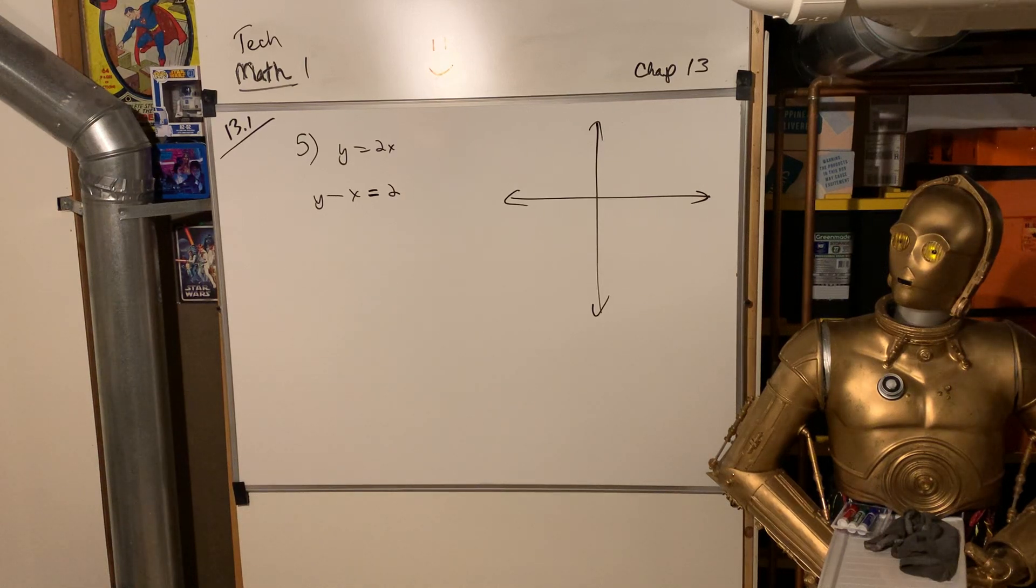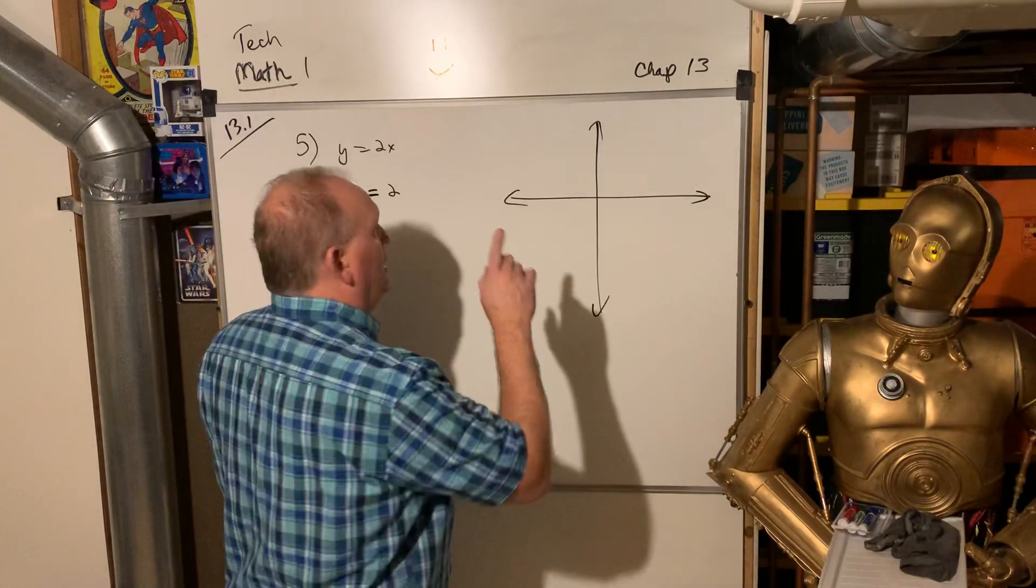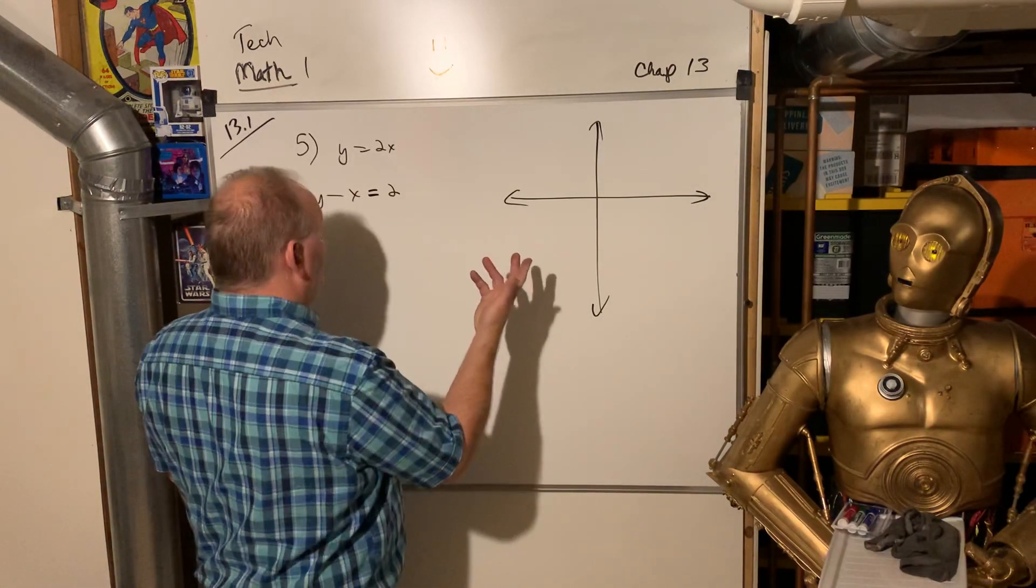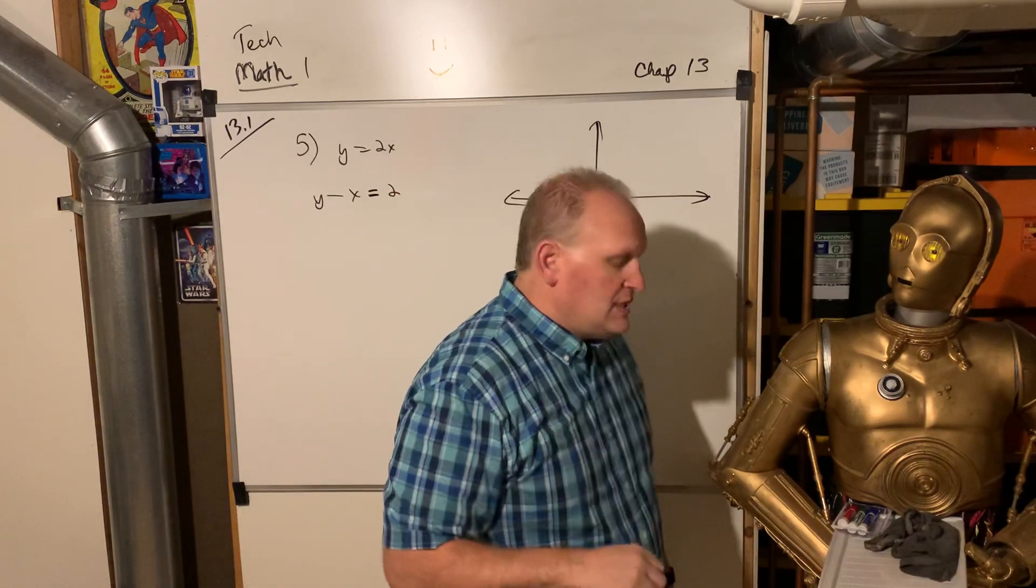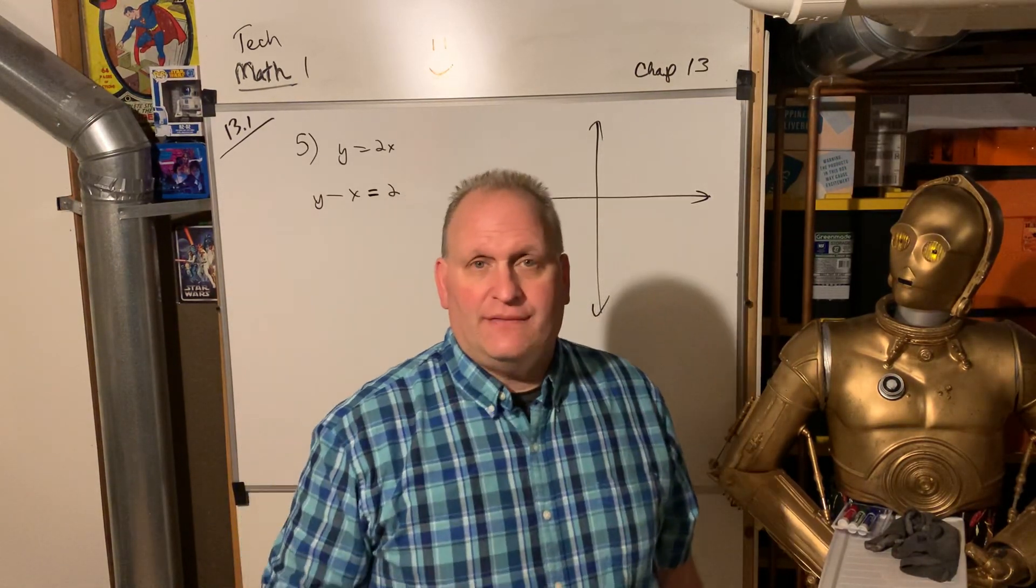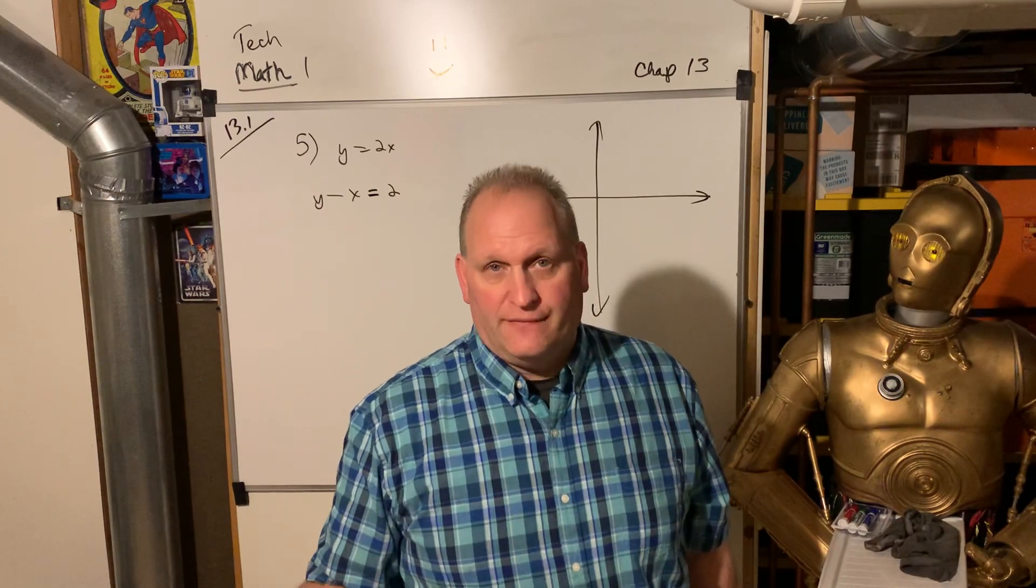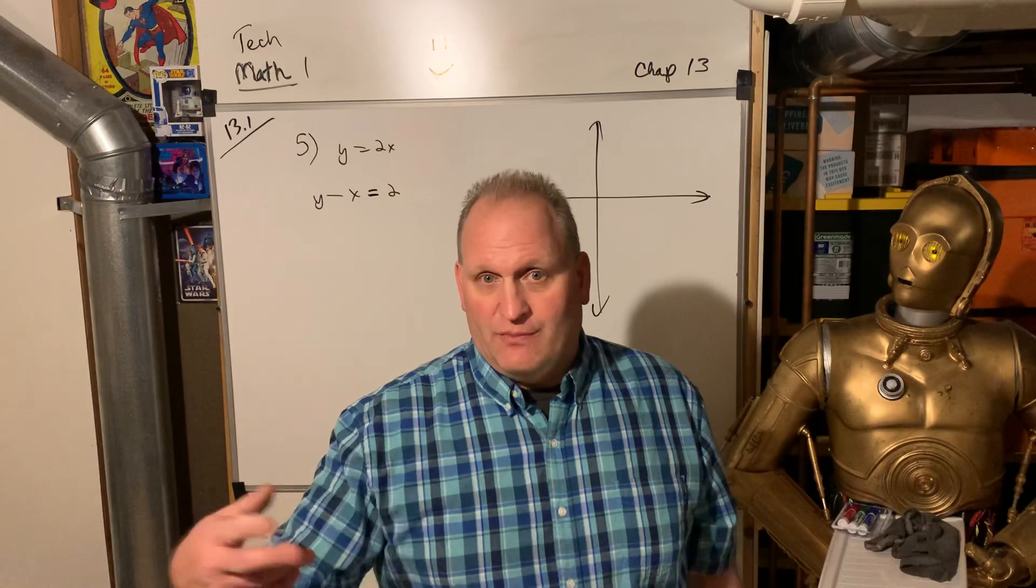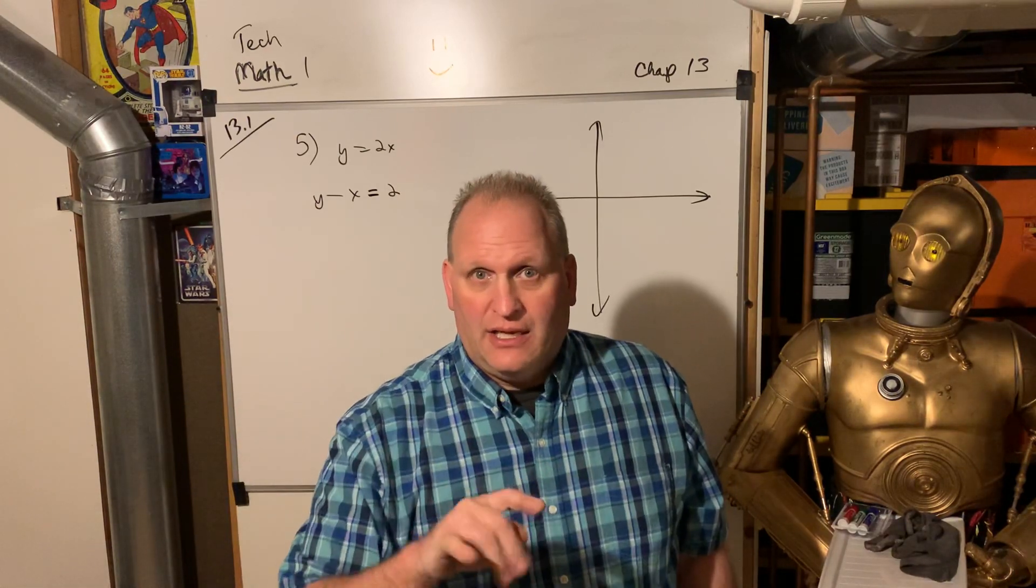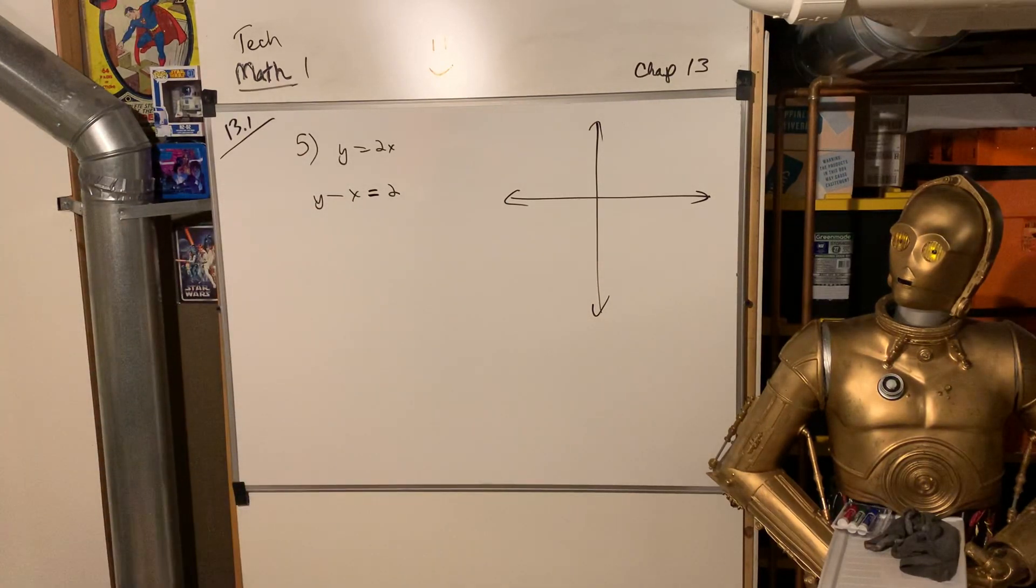All right, this is TechMath 1. We're looking at chapter 13 in the Blue Book, and that is graphing systems of linear equations. So that's a fancy way of saying finding out where two lines cross - the point of intersection. A system of linear equations just means multiple lines, and you're finding out where they cross on the Cartesian plane.